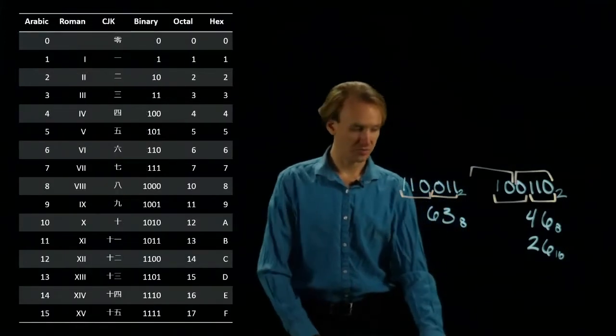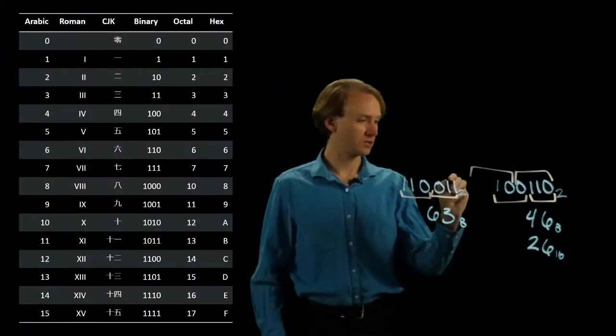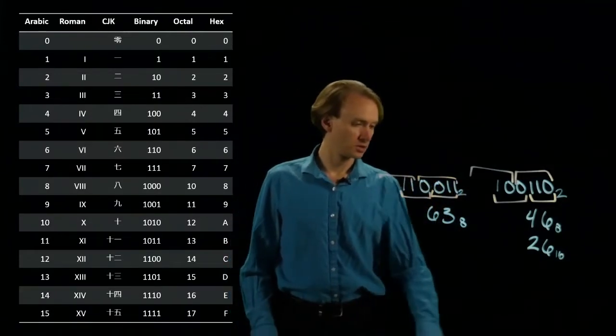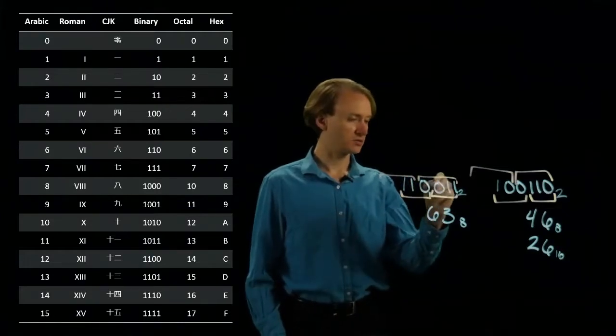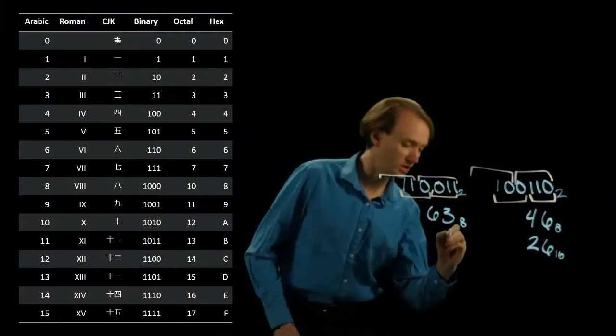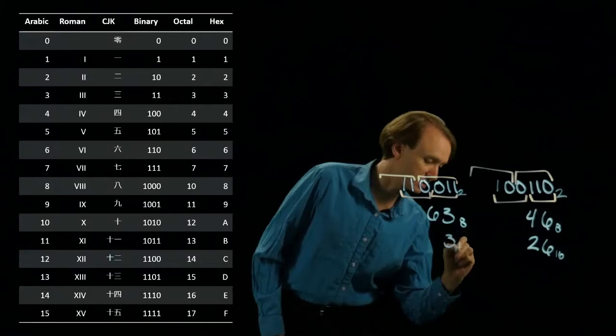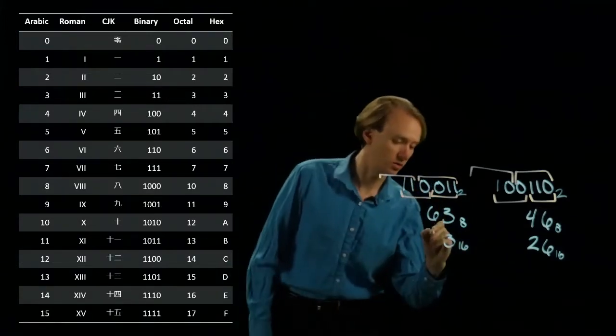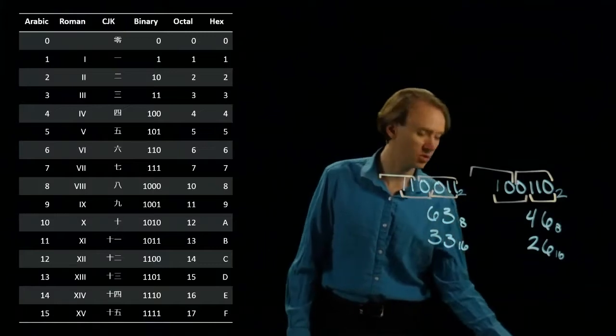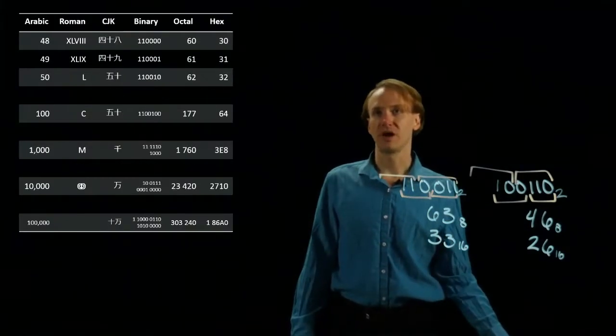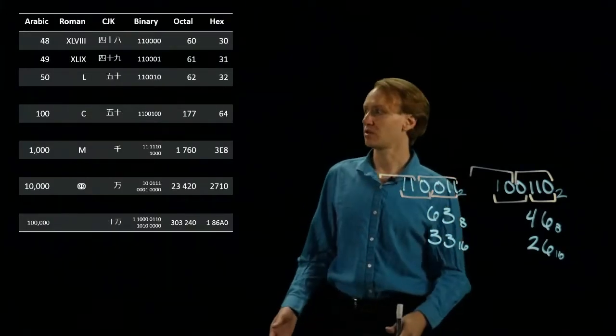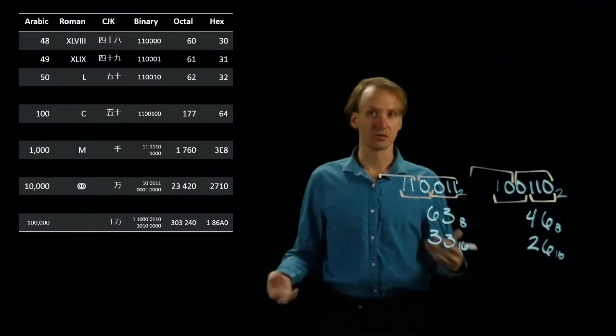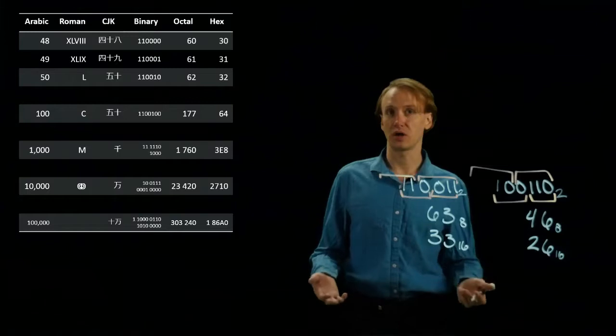Doing this again for hexadecimal. Again, blocks of 4. So here I've got 0011. That's again 3 in hexadecimal. Scroll back down. So the last number in my list for hexadecimal is 32. I've got one more. That's 33, which is where I expect to be again.